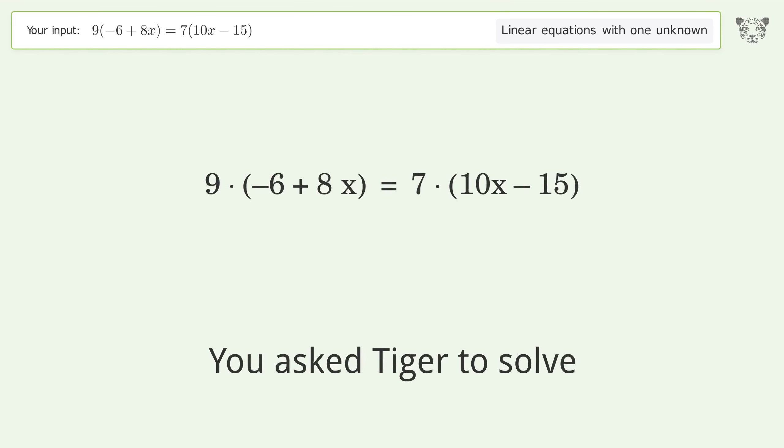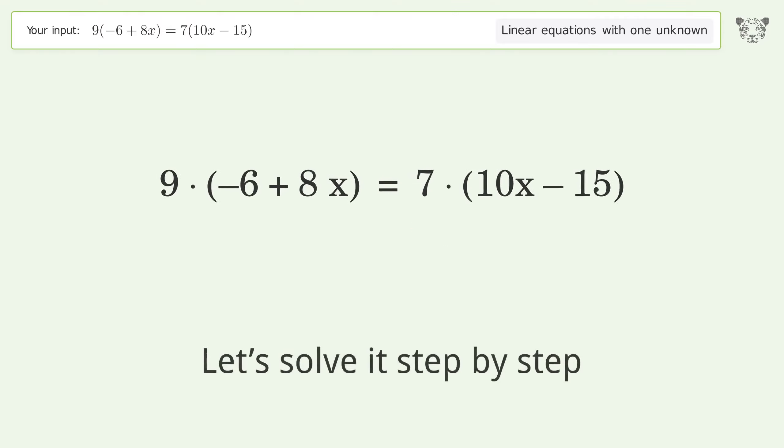You asked Tiger to solve this. It deals with linear equations with one unknown. The final result is x equals negative 51 over 2. Let's solve it step by step.